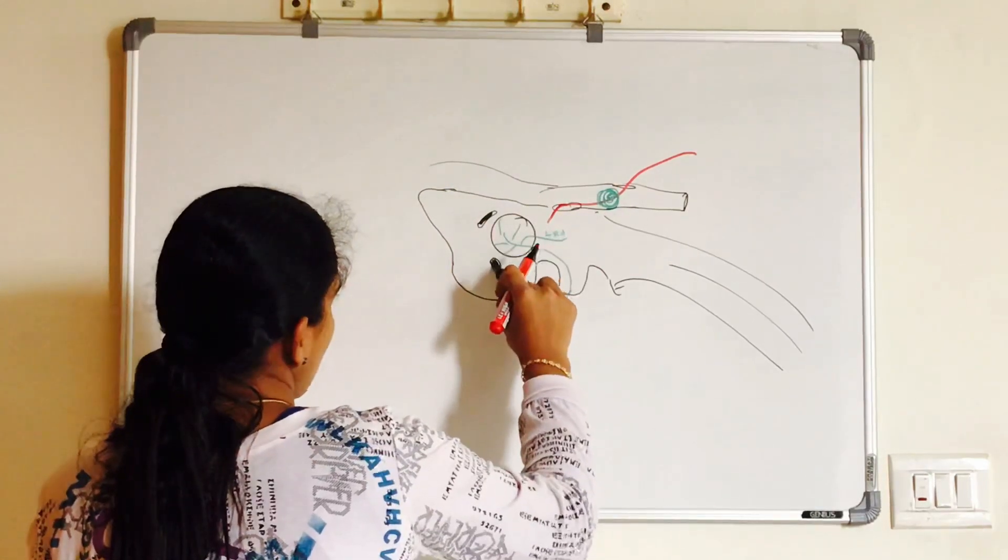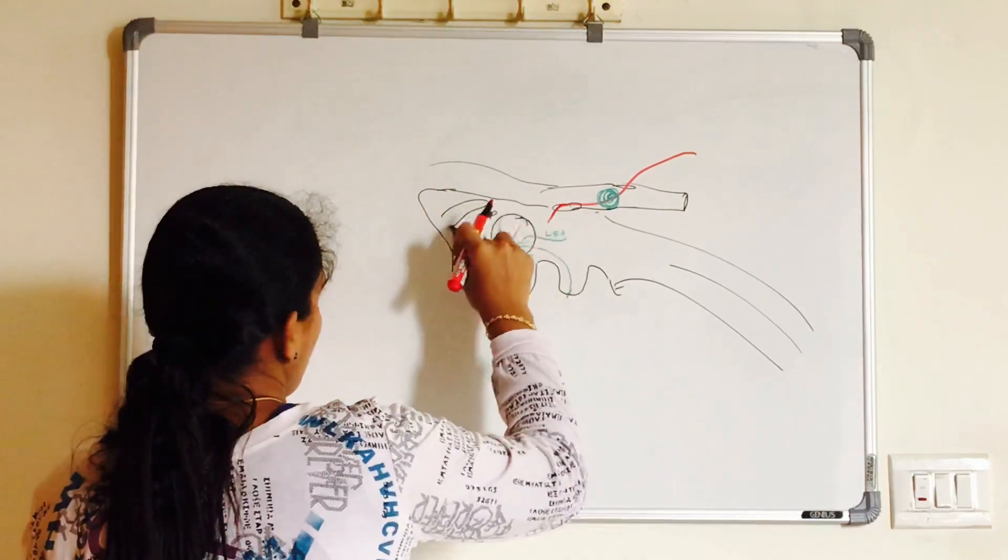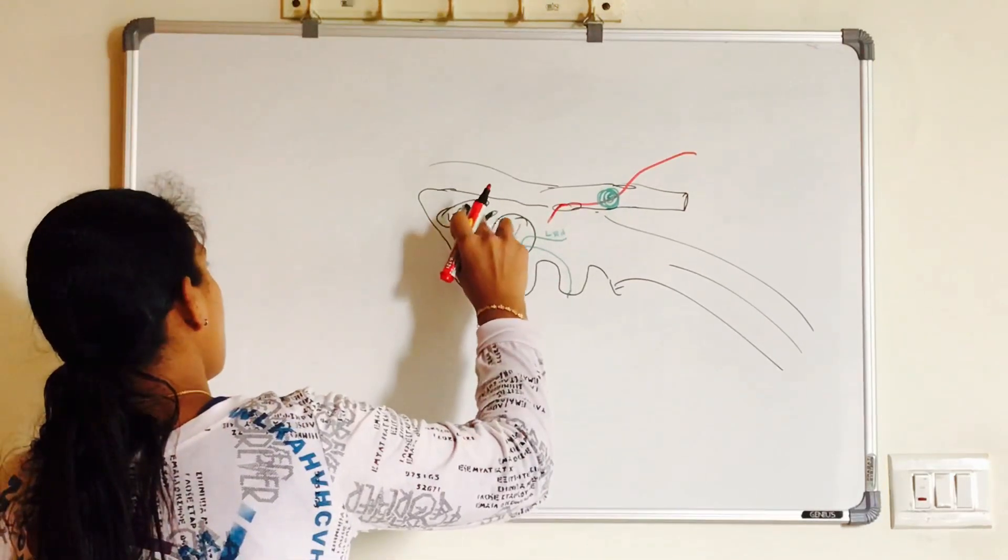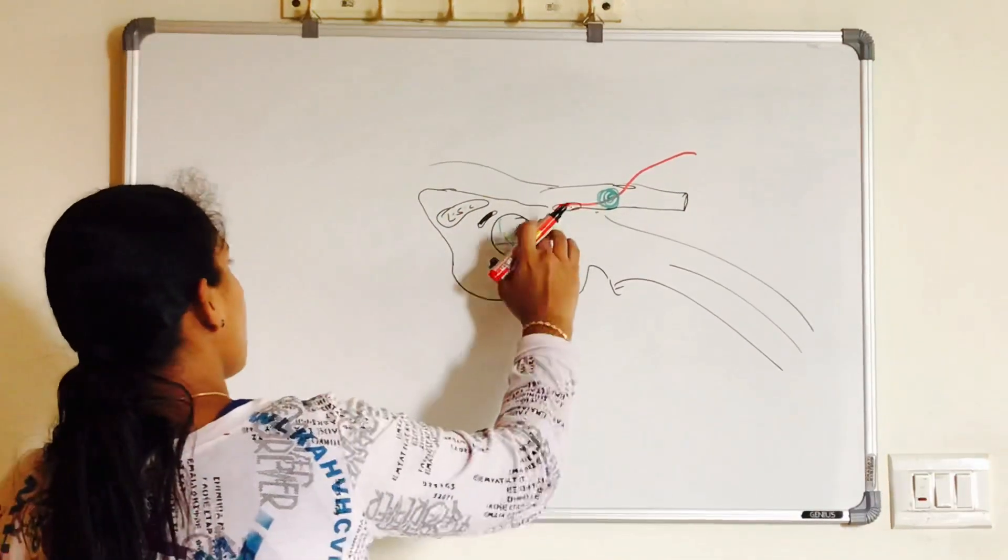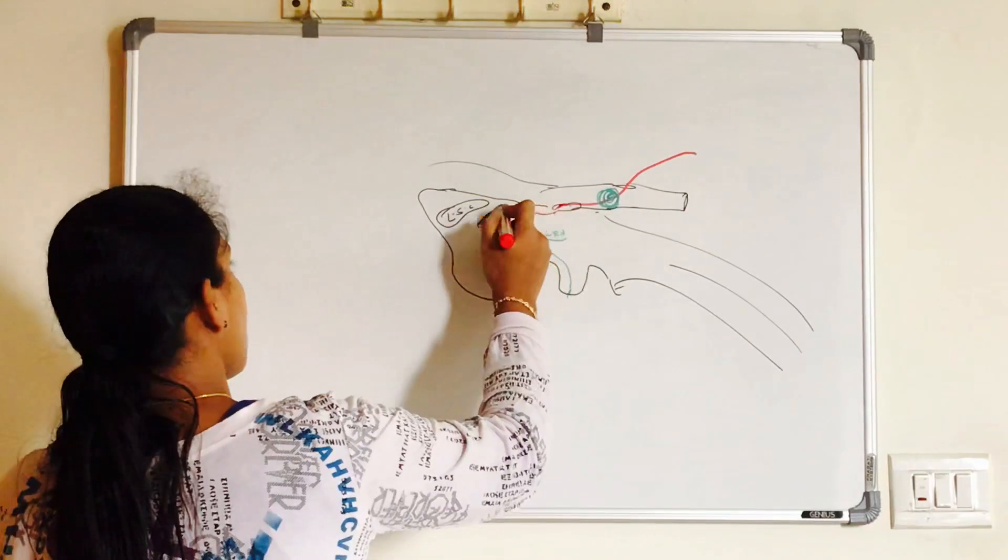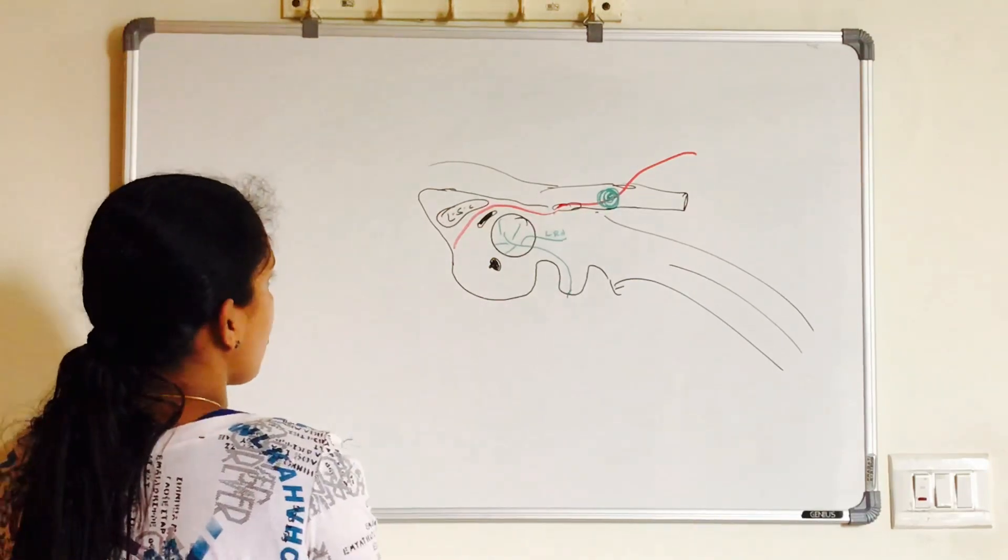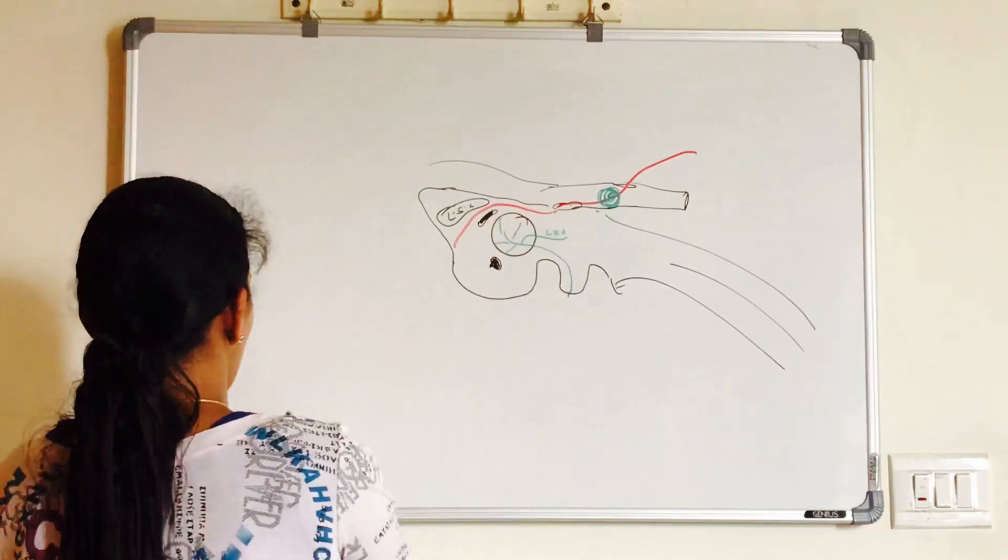Above and behind the promontory you have oval window. Below and behind the promontory you have round window. And that is your impression for lateral semicircular canal. The nerve runs between the lateral semicircular canal impression and oval window.